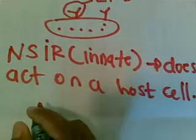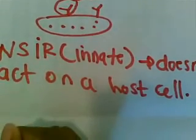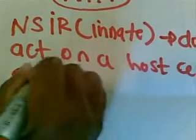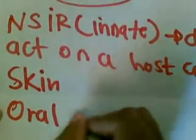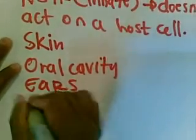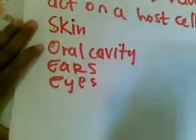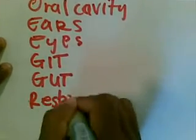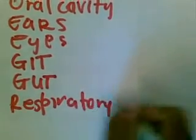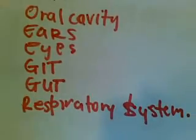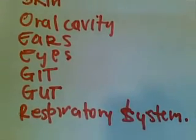There are different sites where a non-specific immune response acts. These sites include the skin, oral cavity, ears, eyes, GIT (gastrointestinal tract), GUG (genitourinary tract), and the respiratory tract. They all have their own mechanisms of fighting against any intruder.